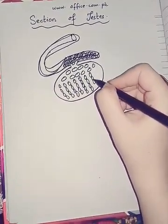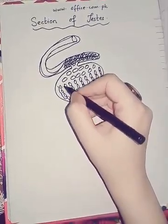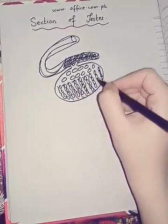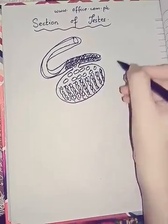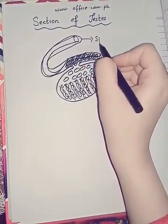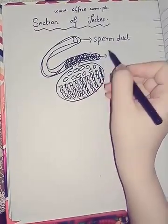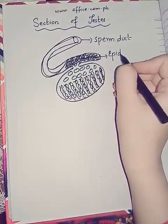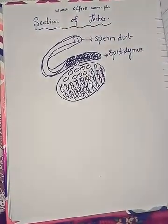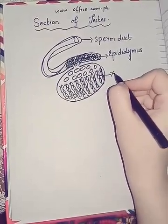These are the cells where the sperms are produced. Let us label this structure. This here is the sperm duct — as we have already labeled, sperm duct. This is epididymis. These are seminiferous tubules.